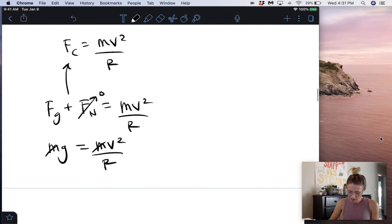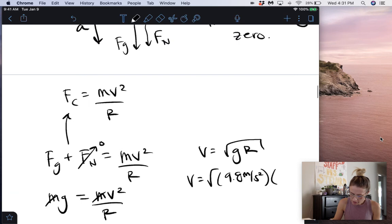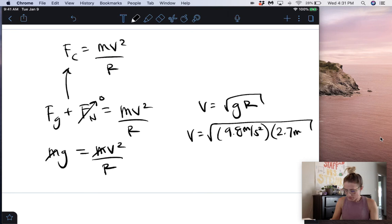And then now we can solve for velocity. So I'm going to multiply both sides by radius. I get V equals the square root of g times R. So velocity is equal to the square root of 9.8 meters per second squared. R, the radius, was 2.7 meters. So we get 9.8 times 2.7. Take the square root of that answer. And we get 5.14 meters per second.